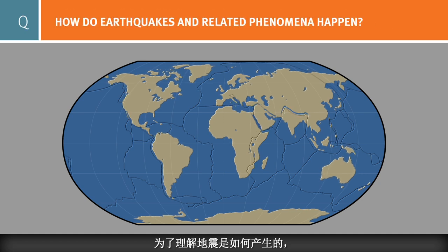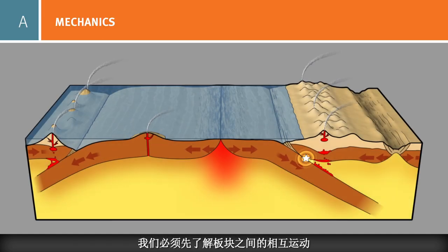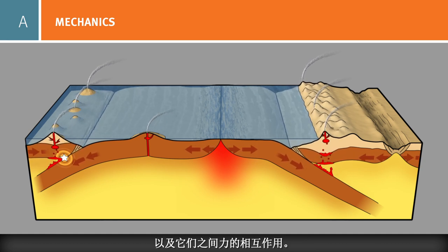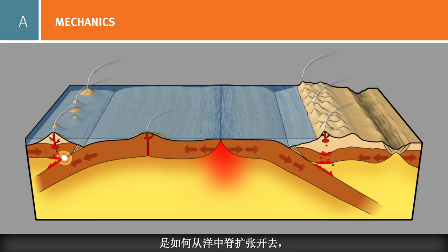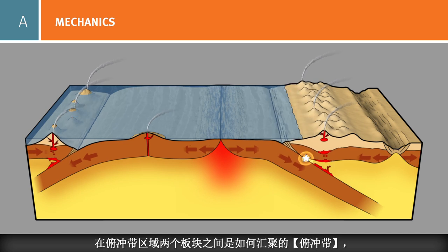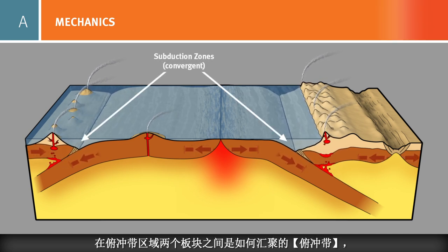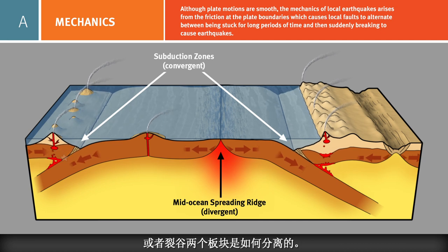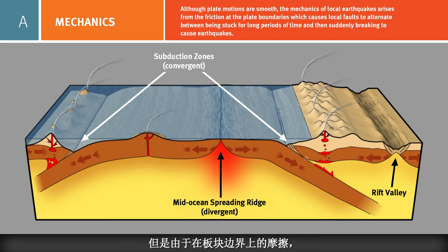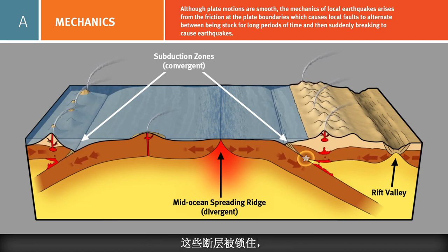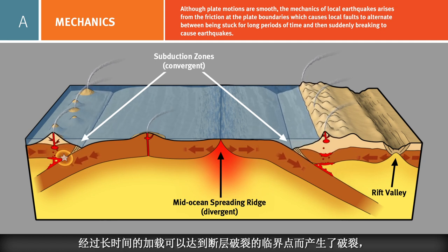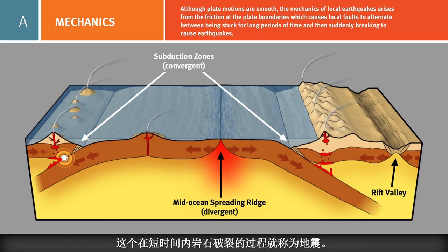To understand how earthquakes happen, we must examine the mechanics of the forces and motions affecting plates and their interactions with one another. You are viewing two oceanic plates moving away from a spreading center. In cross-section, we can better see the convergence of plates at subduction zones and the divergence of plates at a mid-ocean spreading ridge or a rift valley. Although the plate motions are generally smooth, the mechanics of earthquakes arises from the friction at the plate boundaries. Faults held by this friction remain stuck for long periods of time and then suddenly break in major earthquakes.